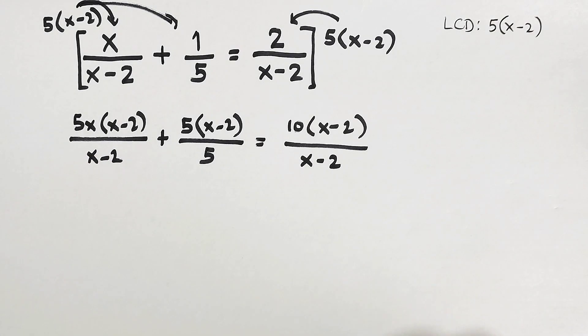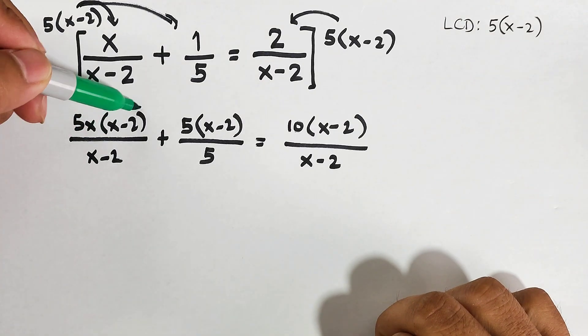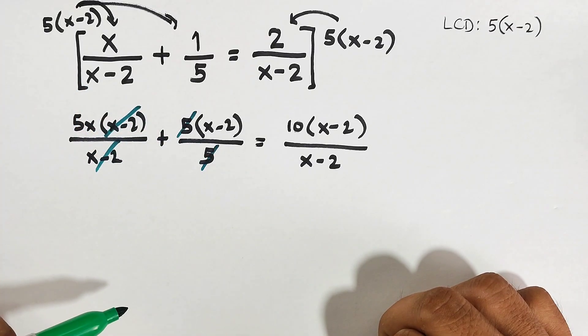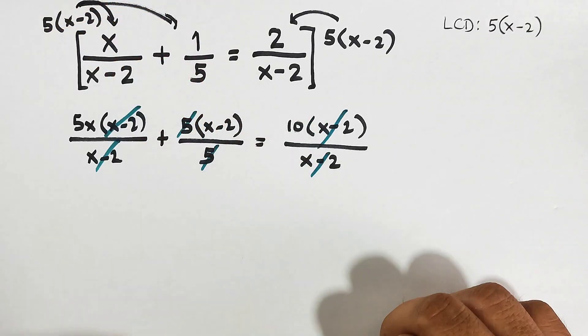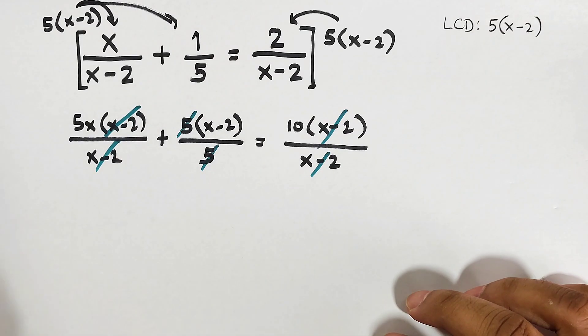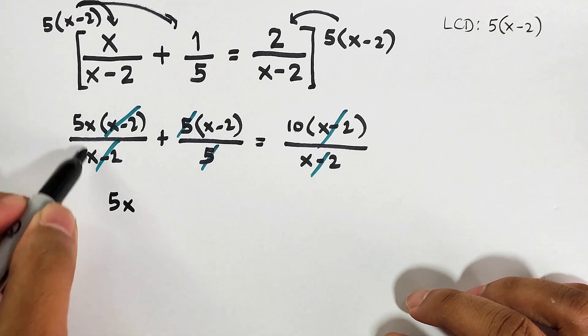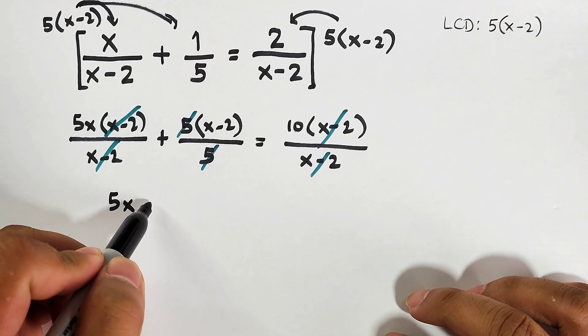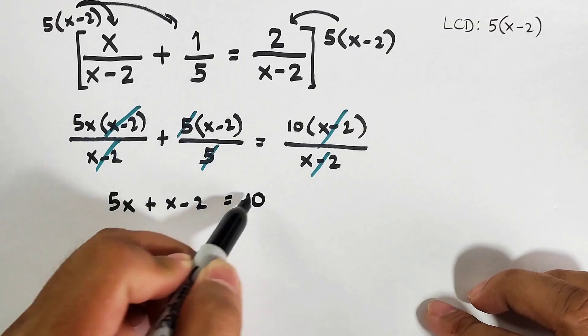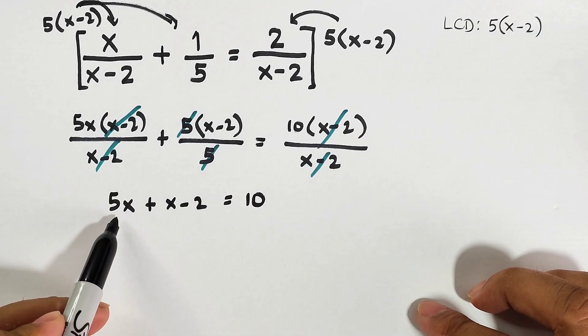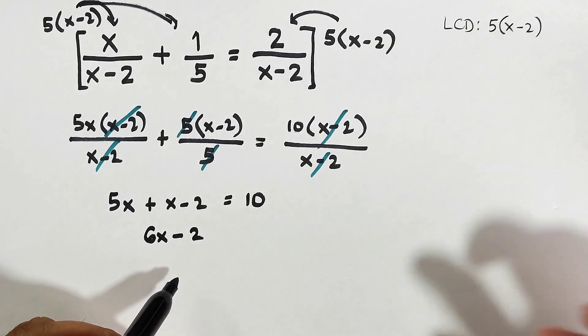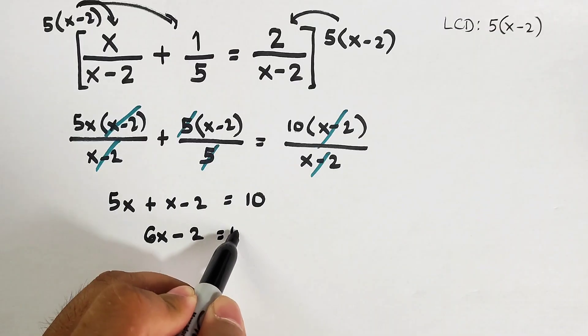We can eliminate the denominators. Cancel x minus 2 with x minus 2, 5 with 5, and x minus 2 with x minus 2. What remains is 5x plus x minus 2 equals 10. 5x plus x is 6x minus 2 equals 10.